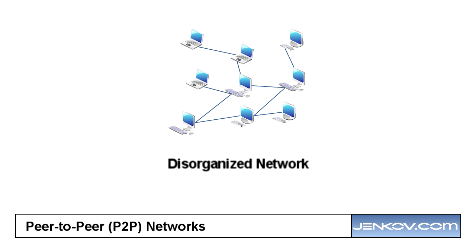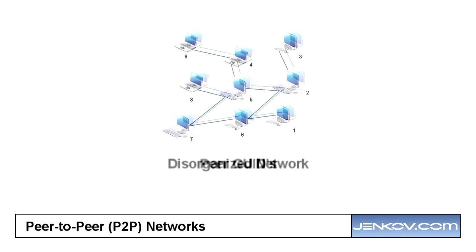So the first step, as shown in this diagram, is the disorganized network, and from that we need to get to step two, which is assigning a GUID to all of the peers. All of the peers have been assigned a GUID, which is short for globally unique ID. This GUID is what the peers will identify each other by — if peer 1 needs to communicate with peer 4, it can use the GUID to make sure it is actually communicating with peer 4 and not peer 17 or peer 9.